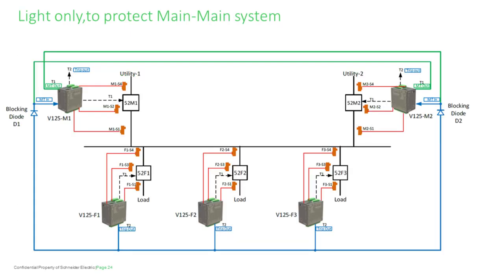Let's look at a sample main-main system — a single bus. This shows how we apply the light-only system. If any fault happens on the bus, we have to clear both of the main incomers. Signals are passed from the feeders up to the main incoming to clear the entire system. This should be called a one-zone system.